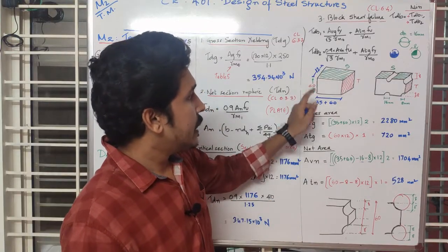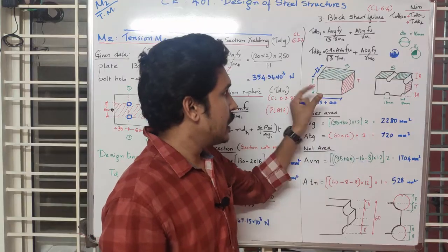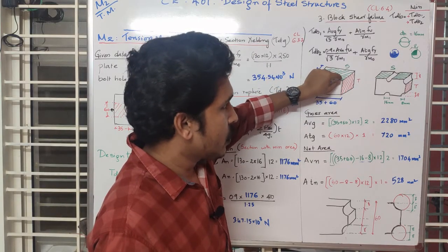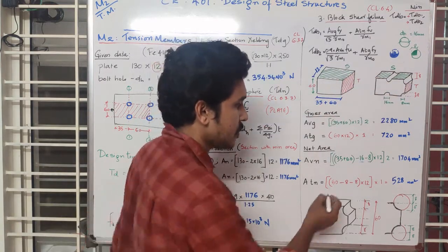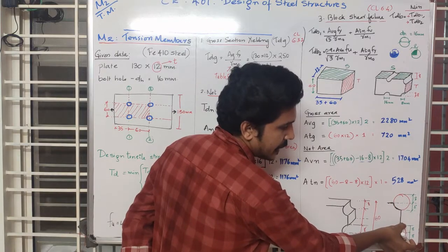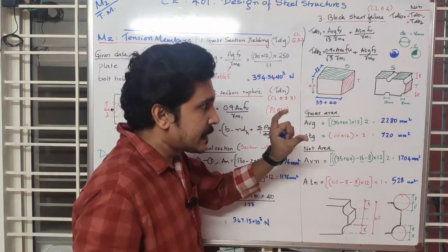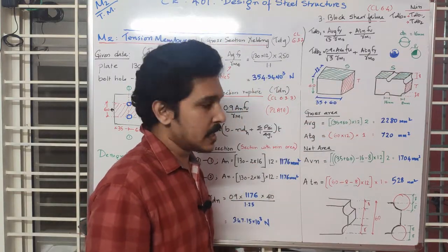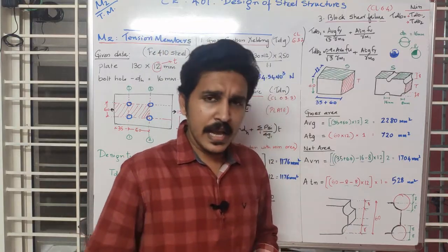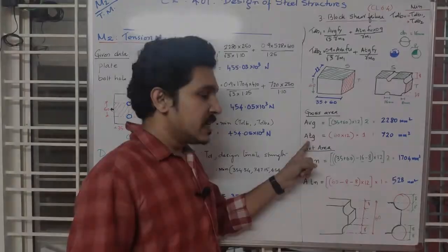ATN is the net area of the tension plane. The tension plane is 60 mm. We subtract the bolt hole contribution: 60 minus 8 minus 8 equals 44 mm for the net length, multiplied by thickness 12 mm, giving ATN equals 528 mm². Now we have AVG=2280, ATG=720, AVN=1704, and ATN=528 mm².